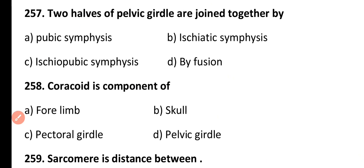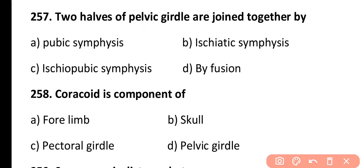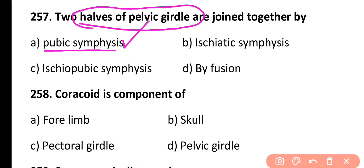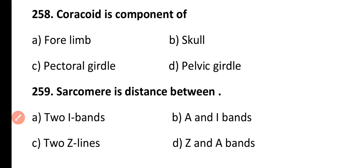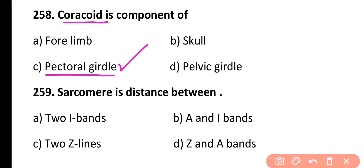Question 257. Two halves of the pelvic girdle are joined together by: pubic symphysis, ischiatic symphysis, or ischiopubic symphysis by fusion. Correct answer is Option A. Pubic symphysis is a joint that connects the two halves of the pelvic girdle with each other. Question 258. Coracoid is a component of: forelimb, skull, pectoral girdle, or pelvic girdle. Correct answer is Option C. Coracoid is a bone of the pectoral girdle.